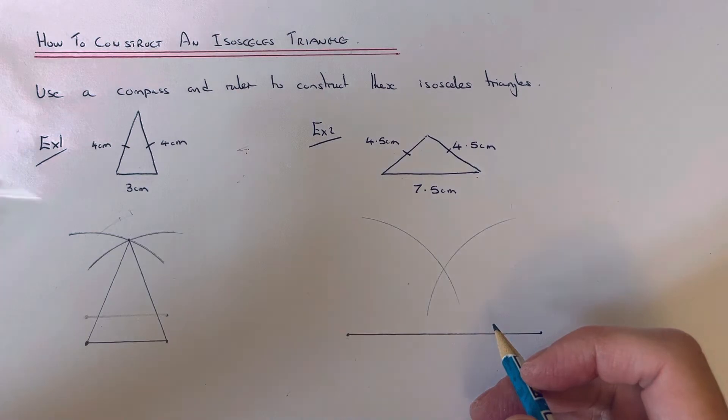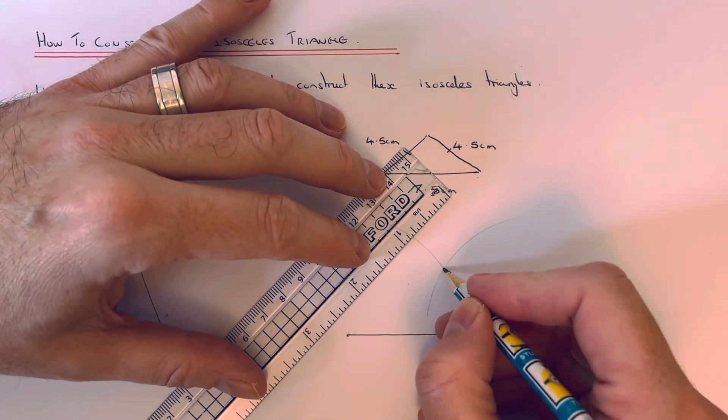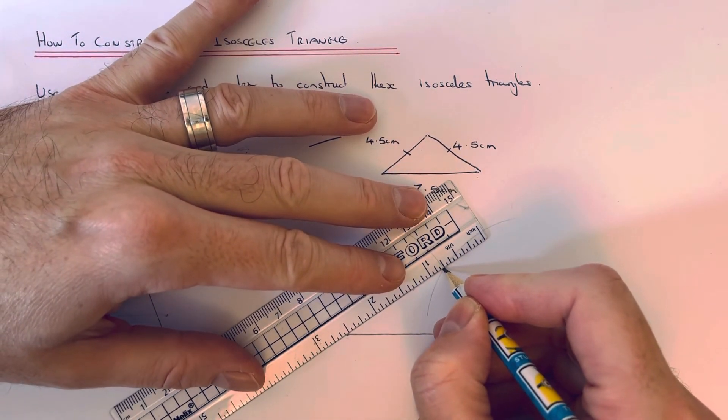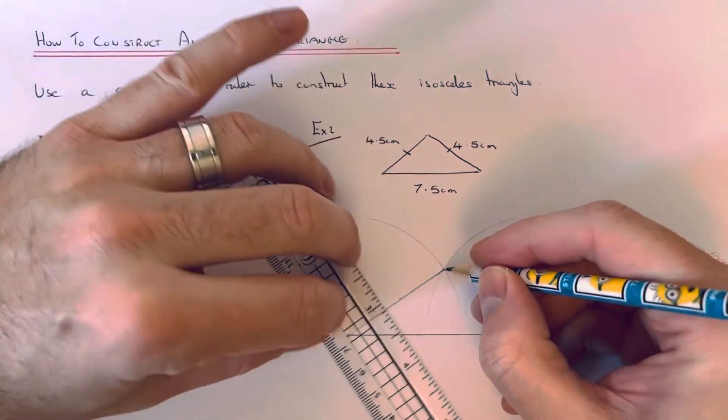Then join the intersection point of our two arcs back to the ends of the line.